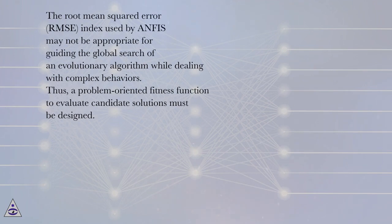The root mean squared error, RMSE, index used by ANFIS may not be appropriate for guiding the global search of an evolutionary algorithm while dealing with complex behaviors. Thus, a problem-oriented fitness function to evaluate candidate solutions must be designed.